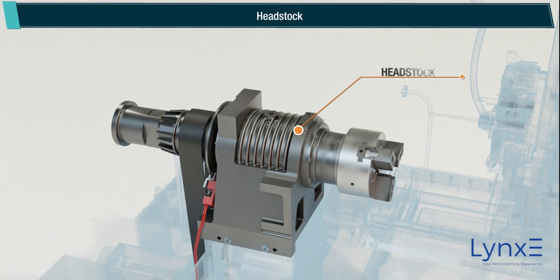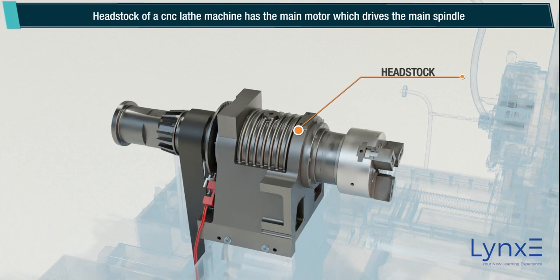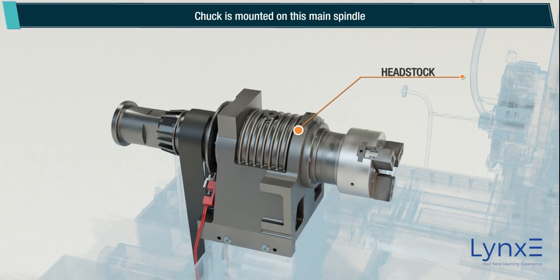Headstock: the headstock of a CNC lathe machine has the main motor, which drives the main spindle. The chuck is mounted on this main spindle.